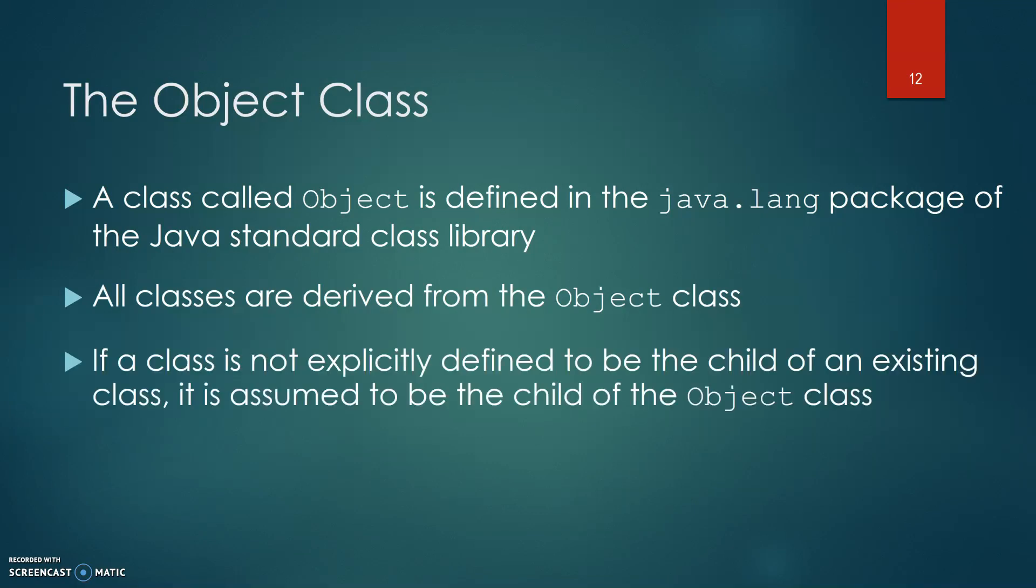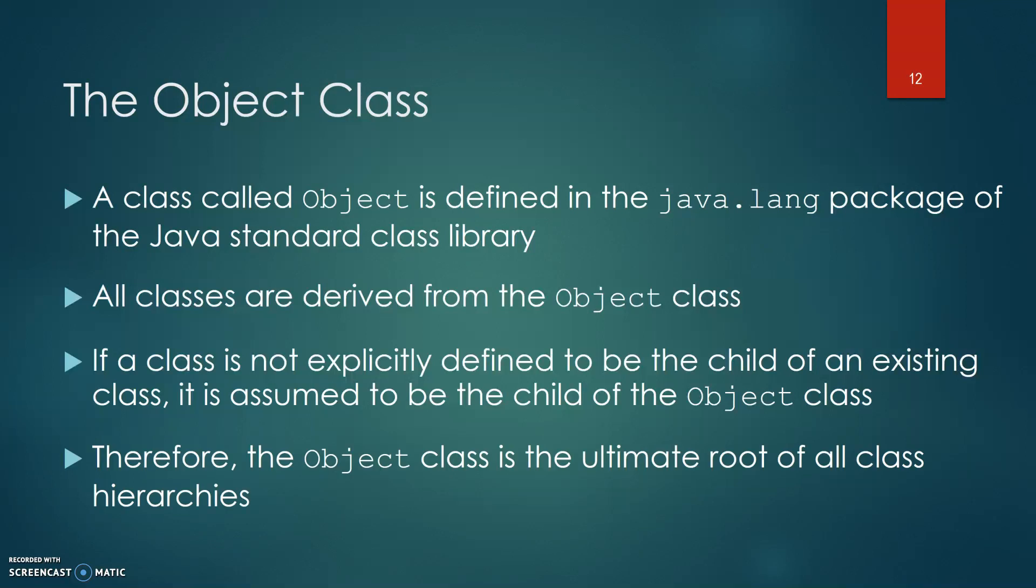If a class is not explicitly defined to be the child of an existing class, it is assumed to be the child of the Object class. Therefore, the Object class is the ultimate root of all class hierarchies.